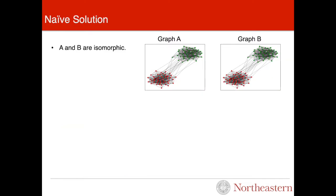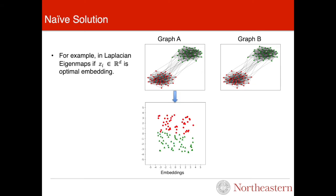I am going to illustrate this with an example. Suppose we have two isomorphic graphs, A and B. We take graph A and create embeddings by, for example, Laplacian eigenmaps. Suppose these are the optimal embedding vectors for graph A.